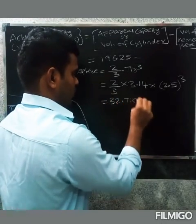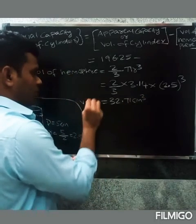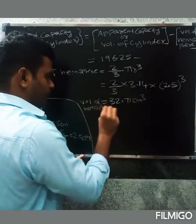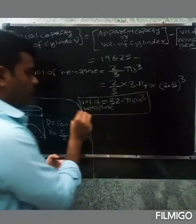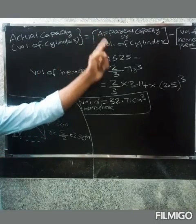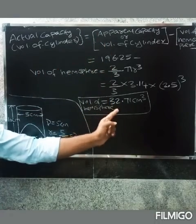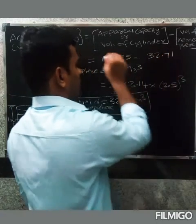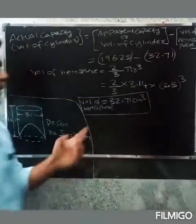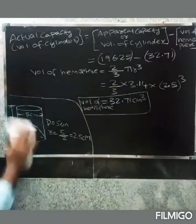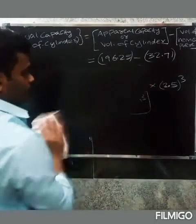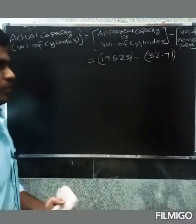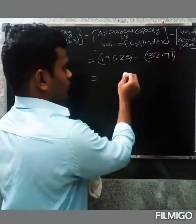The volume of hemisphere is 32.71 cubic centimeters. Now the actual capacity equals volume of cylinder minus volume of hemisphere. So 196.25 minus 32.71.